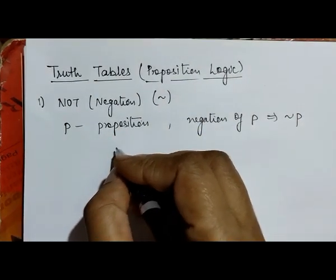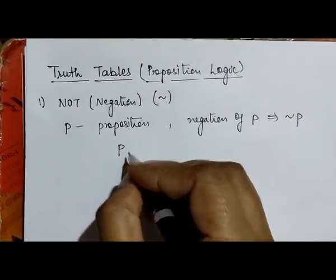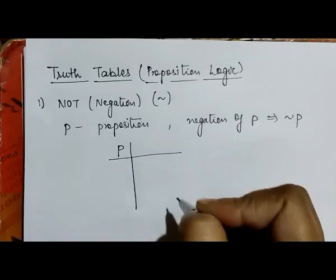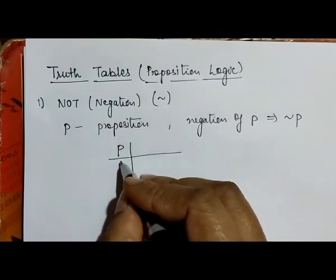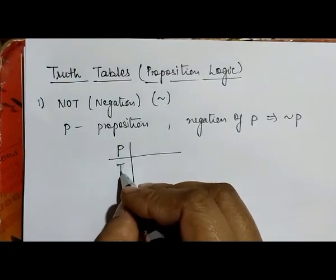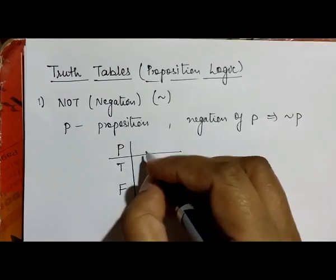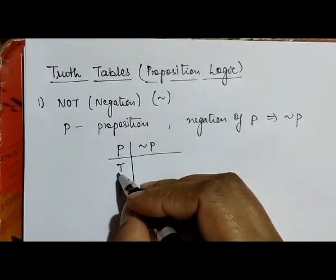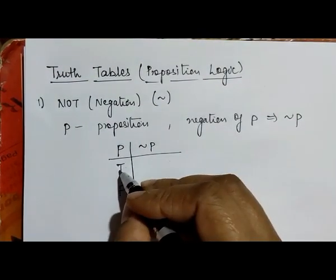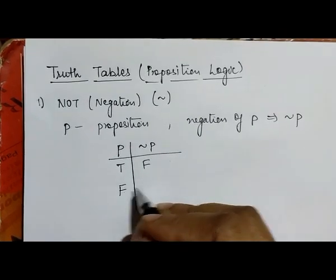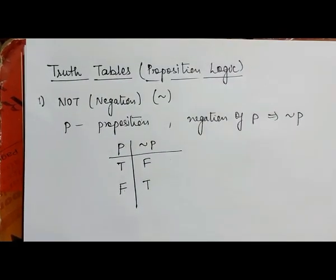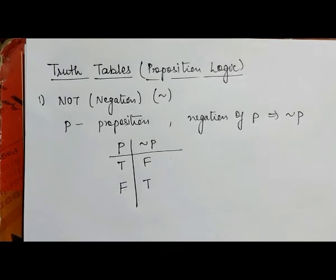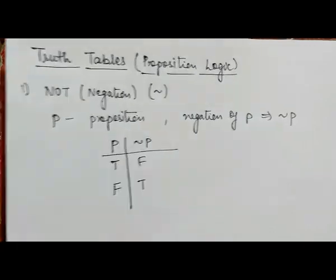The truth table for negation has one input p. The input for p is either true or false. The output, not p, reverses the input: true becomes false and false becomes true. This is the simple truth table for negation, similar to what we prepare for the NOT gate.